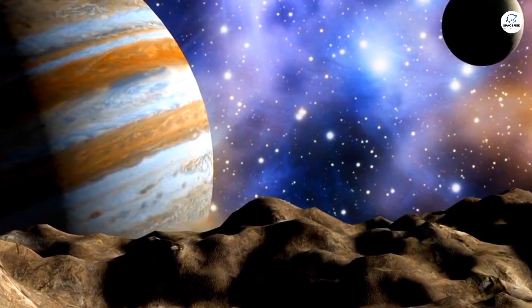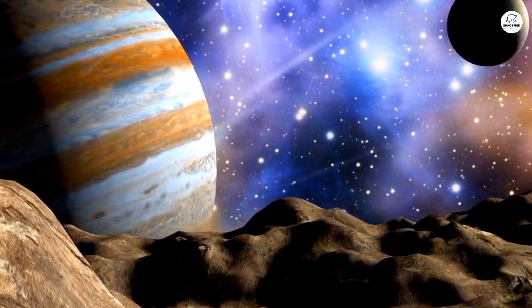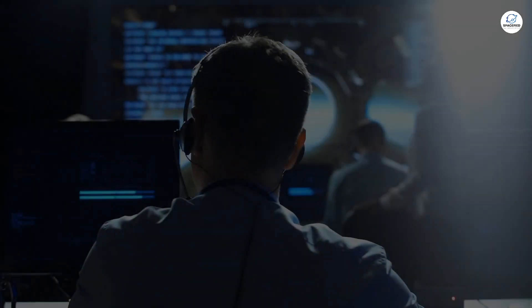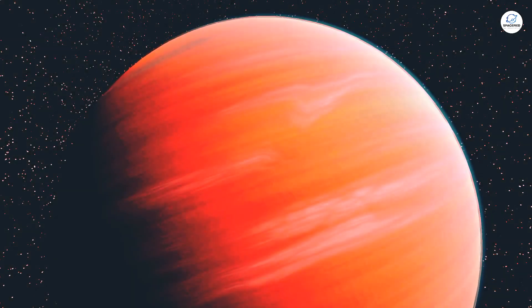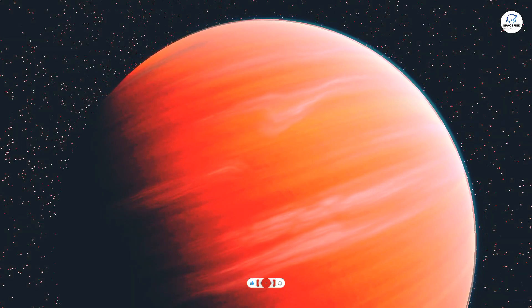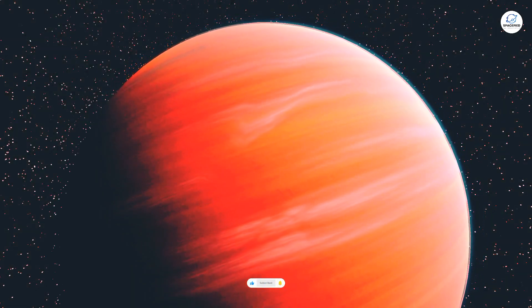Typically, planets like Jupiter reflect light from their stars, but Gliese 504b produces its own. Scientists believe this glow comes from the planet's young age. It's still cooling off after its formation, much like molten metal on an anvil.